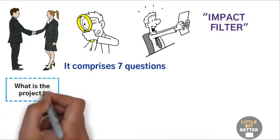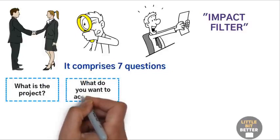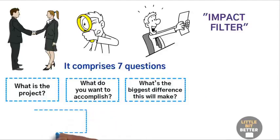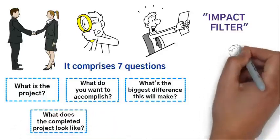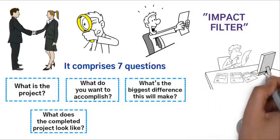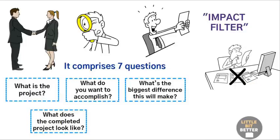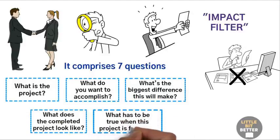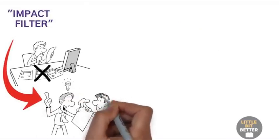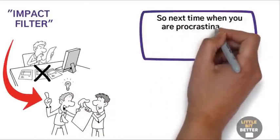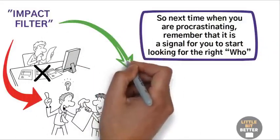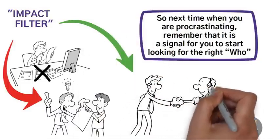Number one, what is the project? Number two, purpose. What do you want to accomplish? Number three, importance. What's the biggest difference this will make? Number four, ideal outcome. What does the completed project look like? Number five, best result if you do take action. Number six, worst result if you don't take action. Seven, success criteria. What has to be true when this project is finished? By completing the impact filter, you will be equipped to explain to other people what you want and why it is important. So next time when you are procrastinating, remember that it is a signal for you to start looking for the right who. So complete the impact filter, get clear on the vision, and start finding the right who to execute the vision.